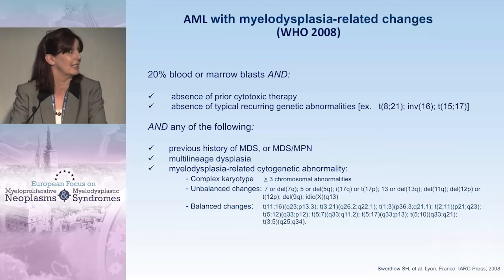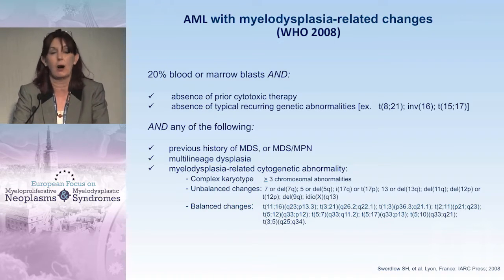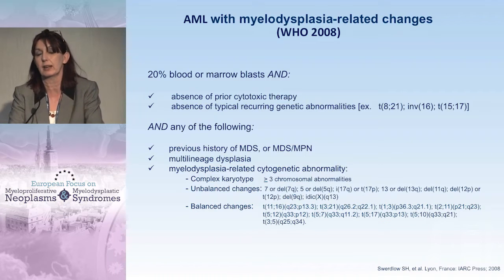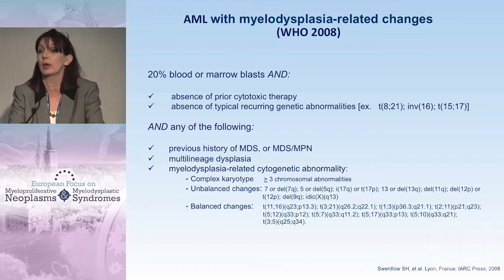But the point is, and we know this very well, that AML is so heterogeneous, and this is just too simple to explain the heterogeneity. So many de novo AML patients, especially elderly patients, do have a lot of features we see in patients with MDS, although these patients never had a history of MDS. The WHO classification of 2008 tried to account for this fact, introducing the so-called AML with myelodysplasia-related changes.